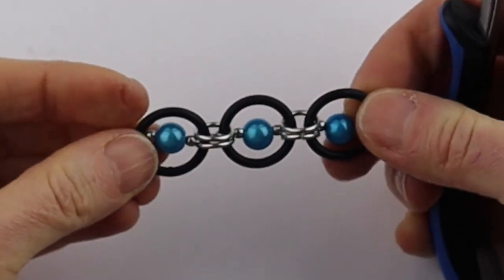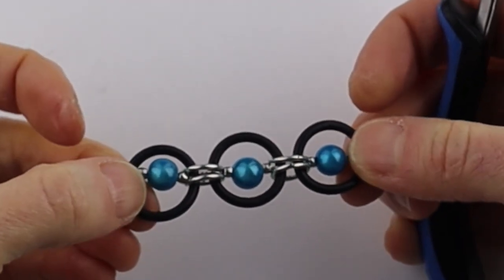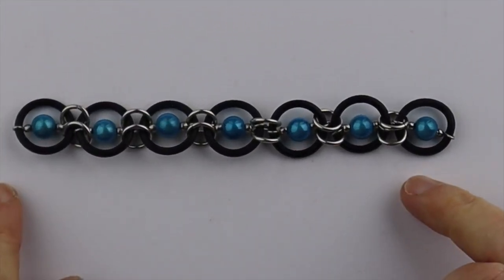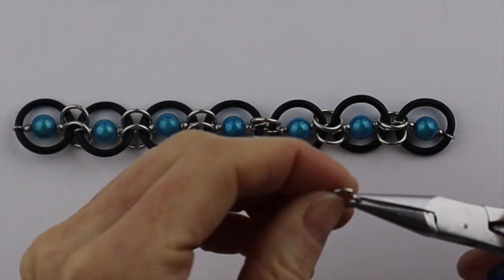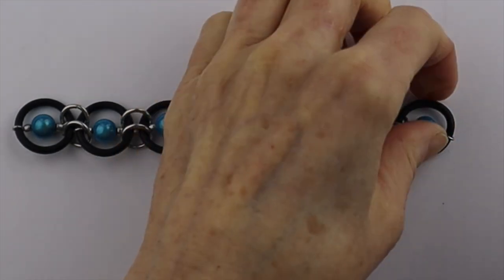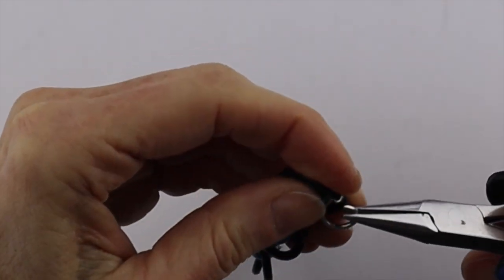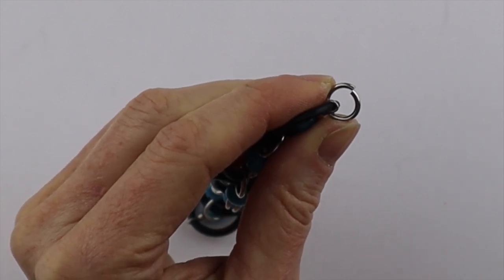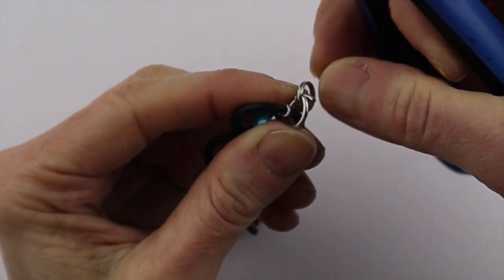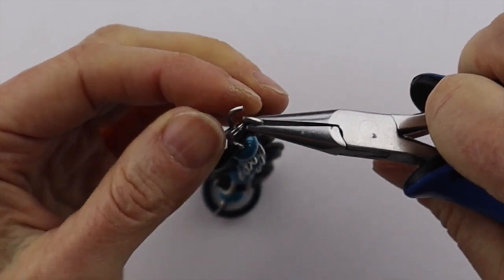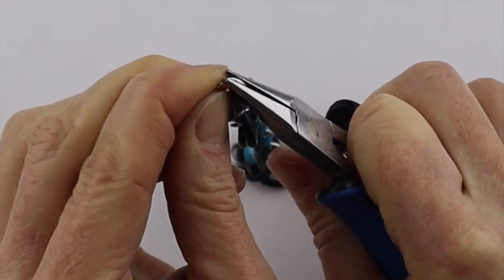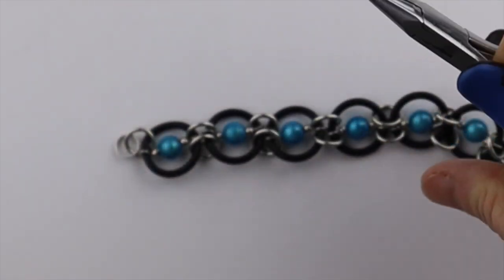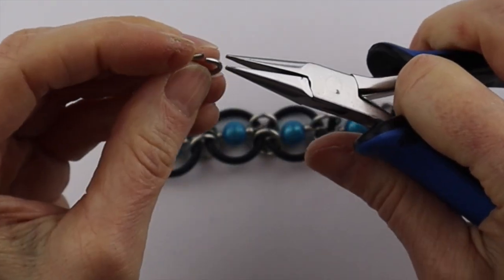Once you have all your O-rings together, you're going to add a clasp. We're going to take a couple more of these larger jump rings and attach them on either side. We'll attach one side to a part of the clasp. It's like a little split ring, so whatever you have for a clasp is good.